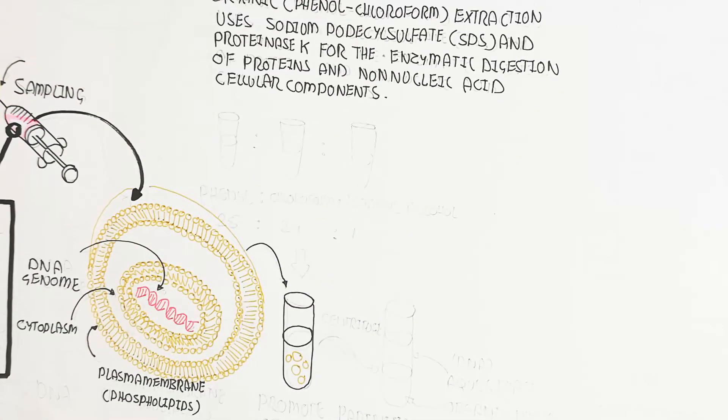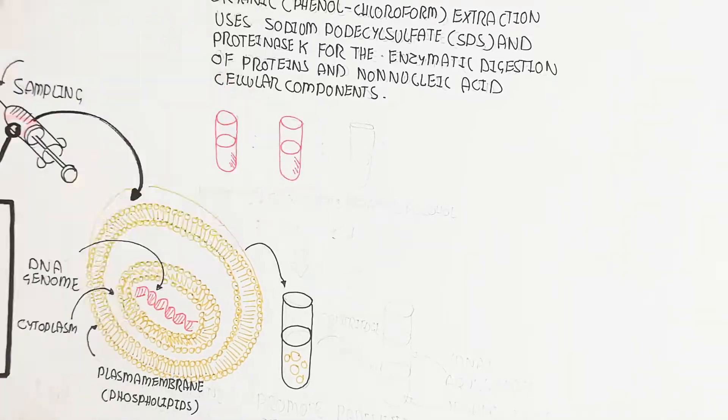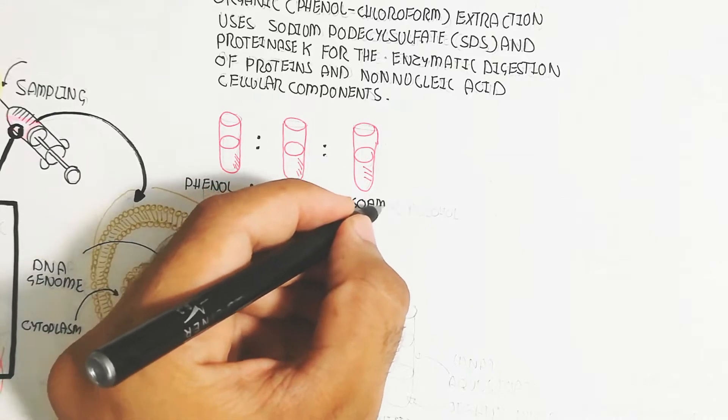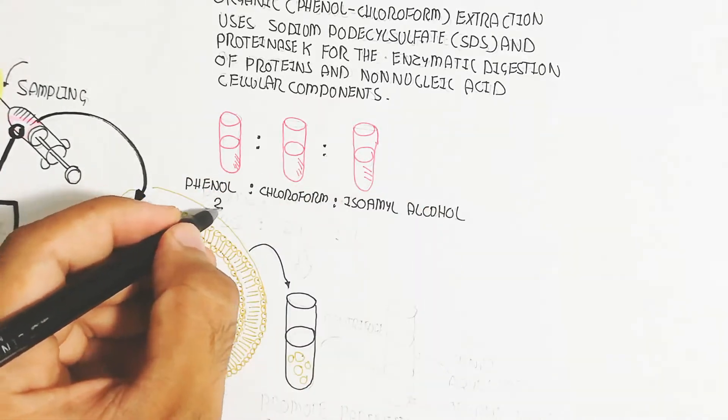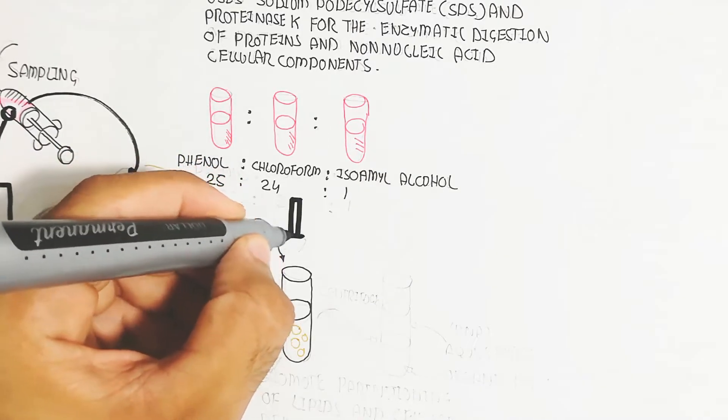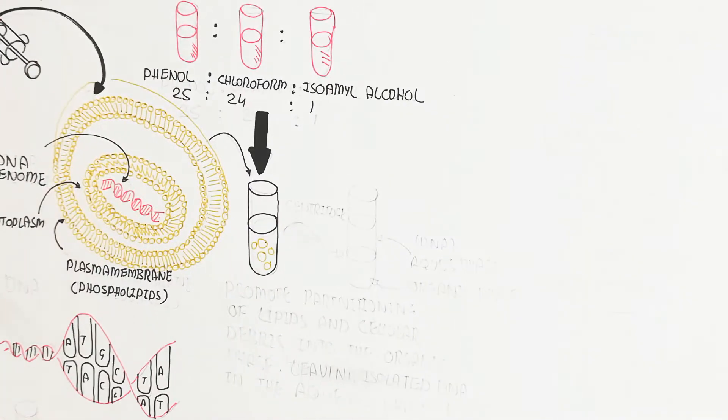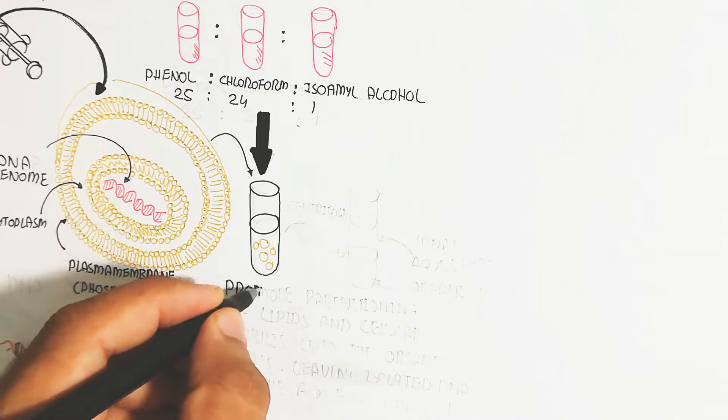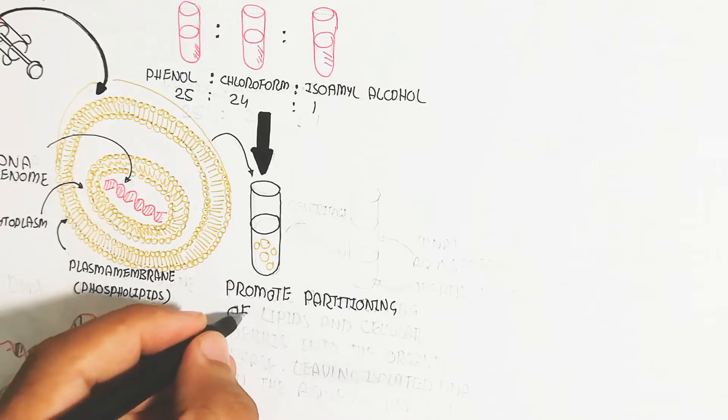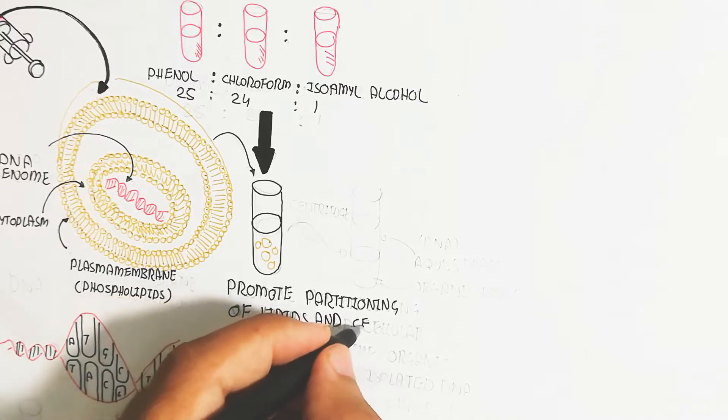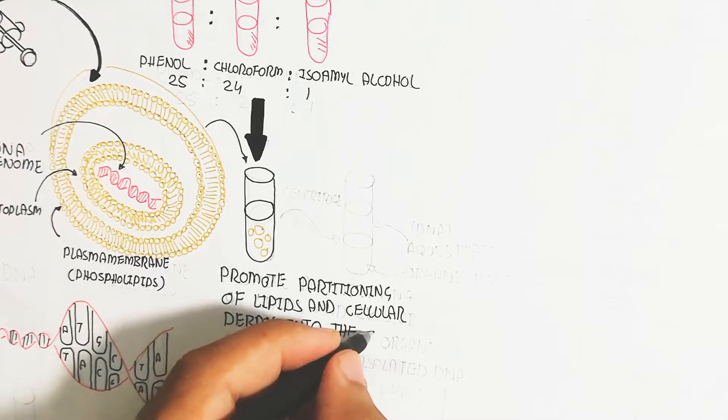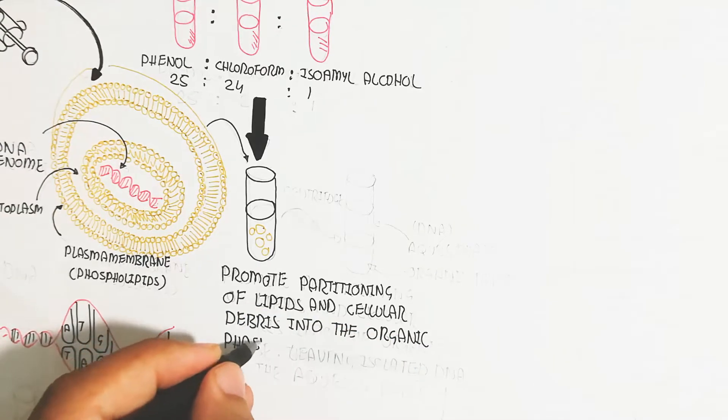This promotes the partitioning of lipids and cellular debris into the organic phase, leaving the isolated DNA in the aqueous phase. Phenol is 25%, chloroform 24%, and isoamyl alcohol 1%, which contains solution used to promote partitioning of lipids and cellular debris into the organic phase, leaving isolated DNA in the aqueous phase.